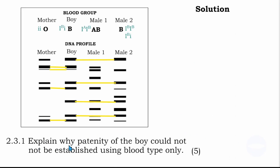Question number one: explain why paternity of the boy could not be established using blood type alone. There is a reason we cannot use blood type here. If you look at the genotype of the boy, it is allele B and allele O. He got the allele O from his mother, so we are left with allele B, which he must have gotten from his father. However, we find that both males have blood type B, so we cannot determine who the father is.